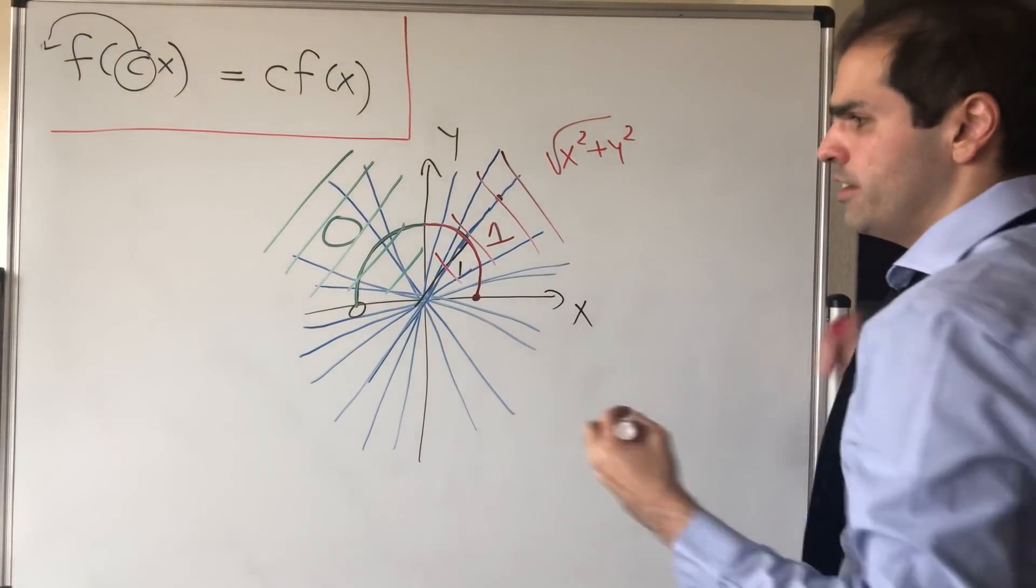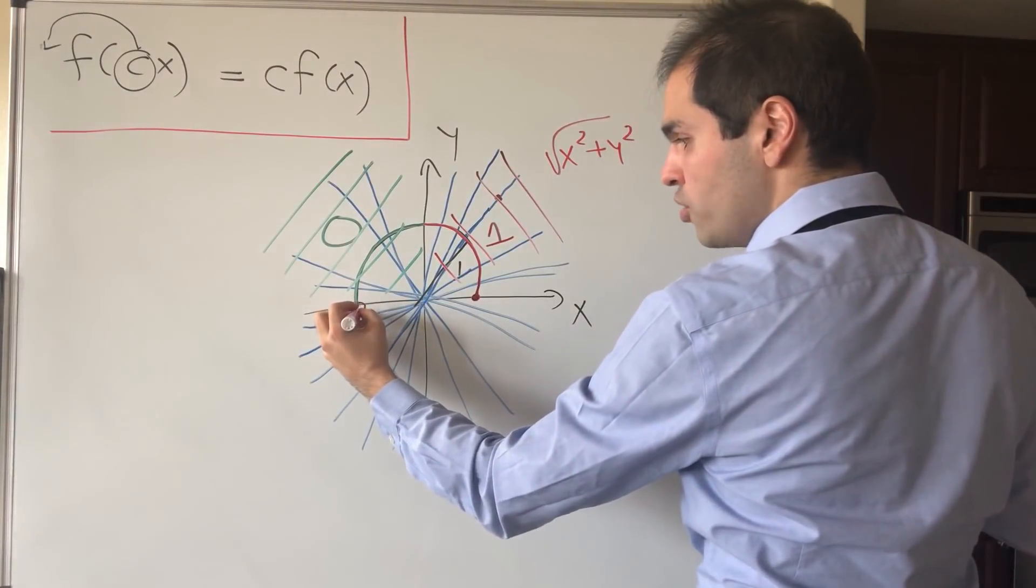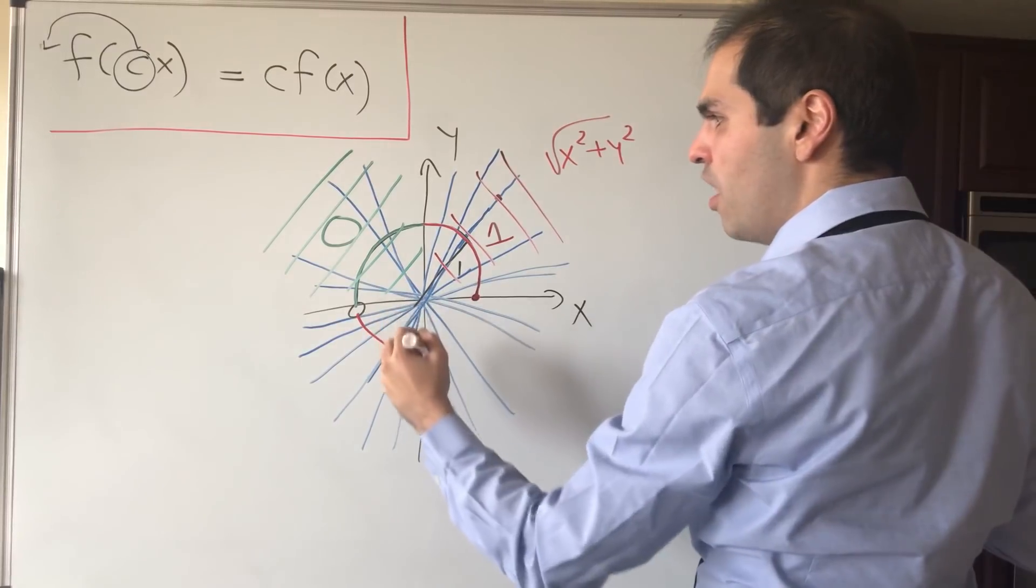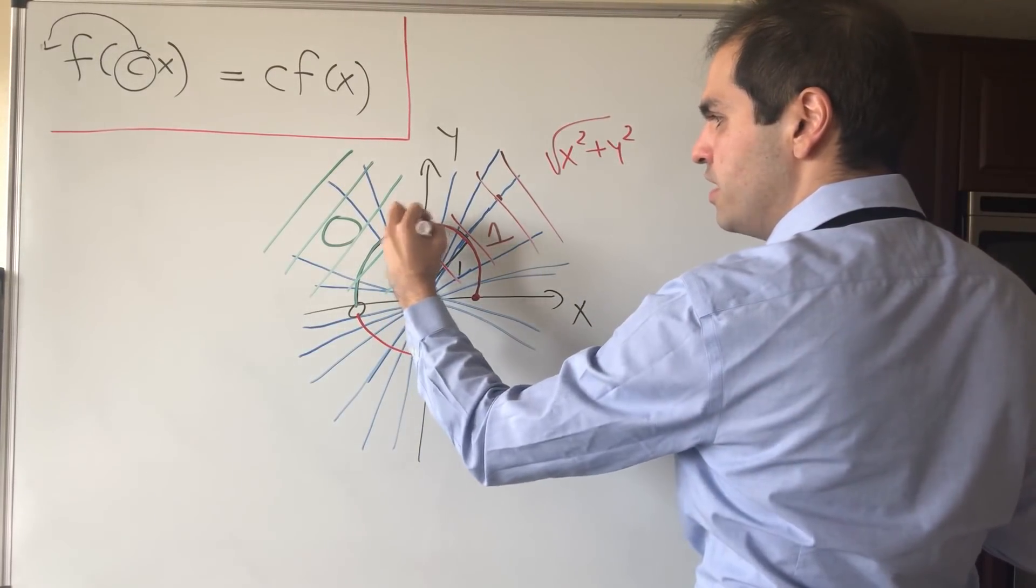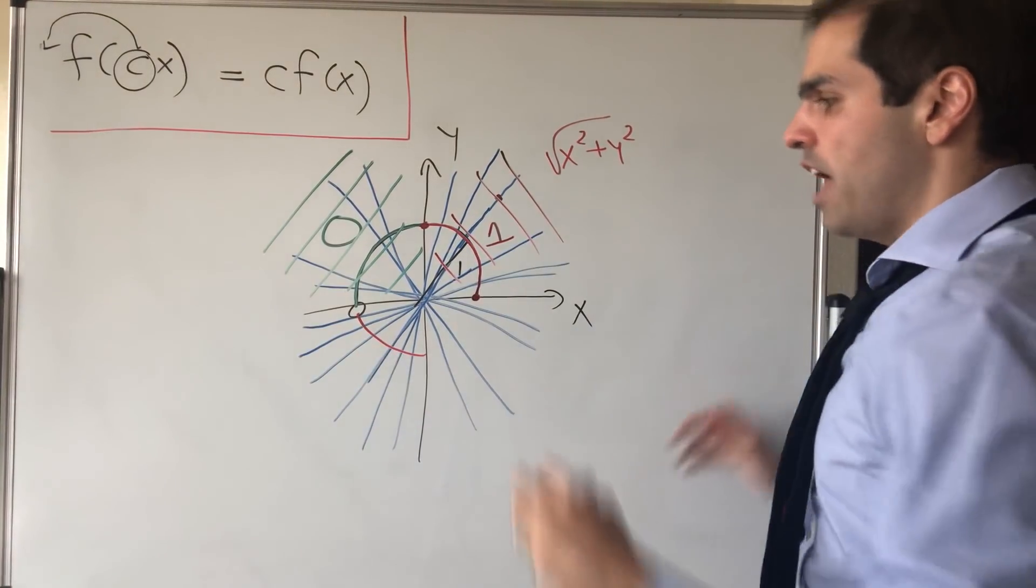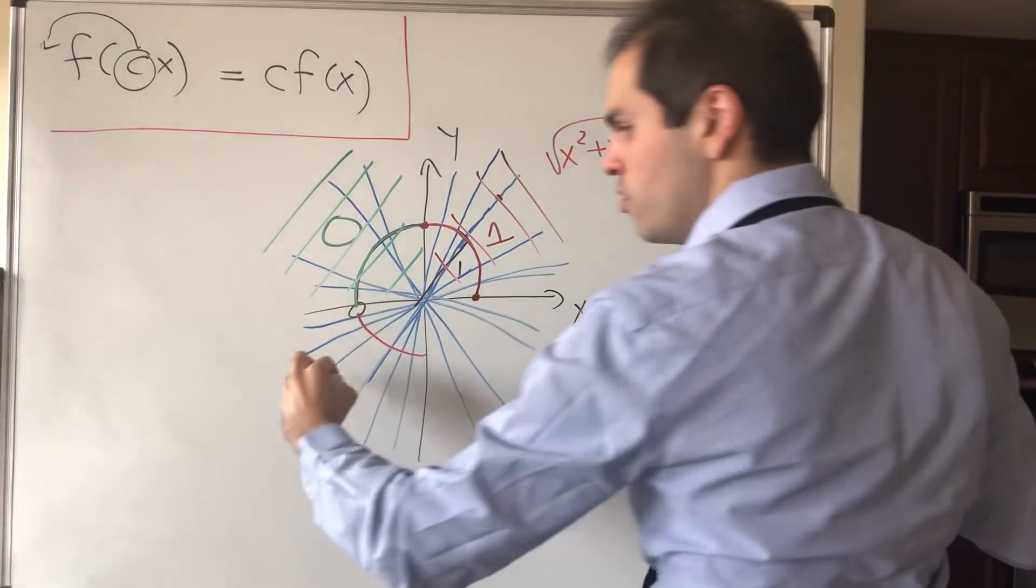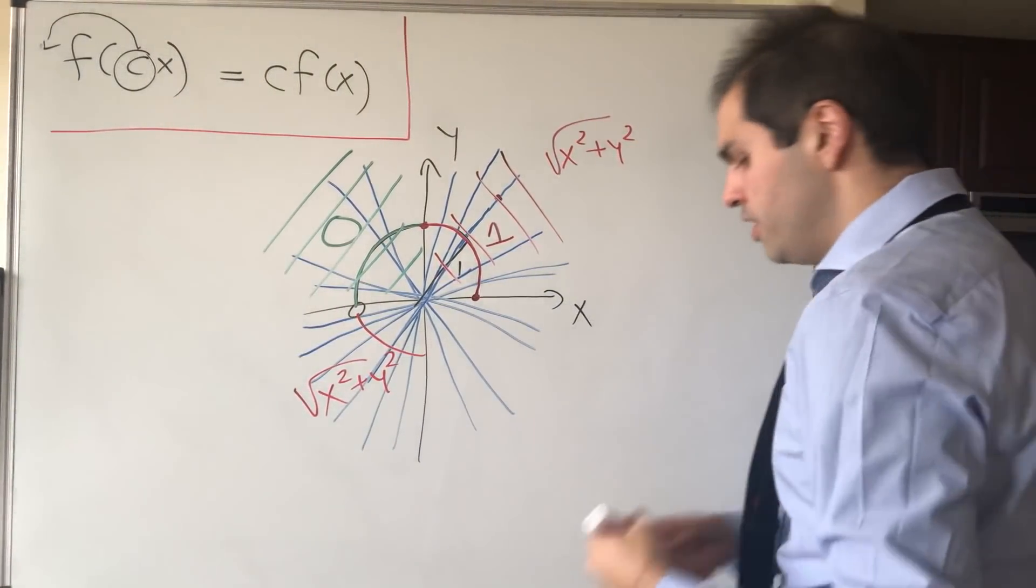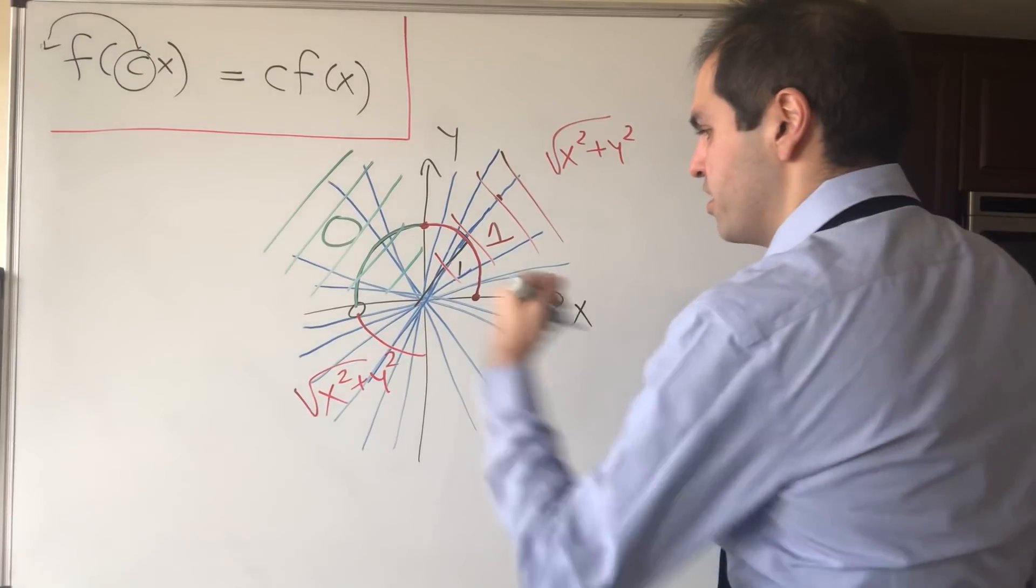In this quadrant, f will just become—let's define it here also to be 1 and here to be 0. In this quadrant, f will also be square root of x squared plus y squared. And lastly, in this quadrant, f will be 0.